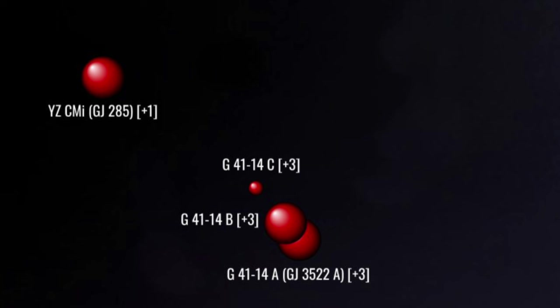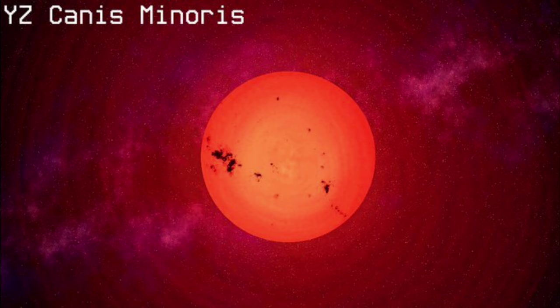Rimward, west and 2 parsec south, we arrive at YZ Canis Minoris, a red dwarf about a third the mass and radius of the Sun. At spectral class 5, it is a nondescript red dwarf, neither too hot nor too cold. One thing it is, is a flare star, and a well-studied one. Its activity has been the focus of scientific attention since at least the 1970s.